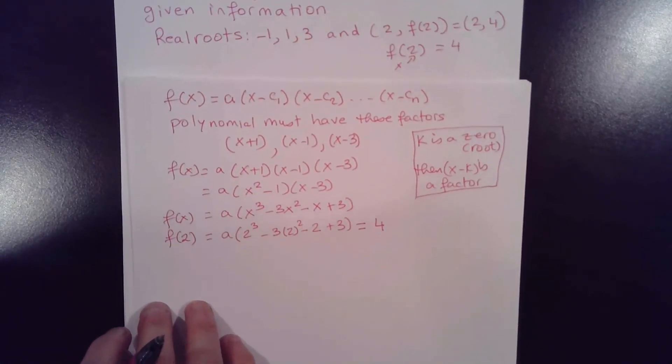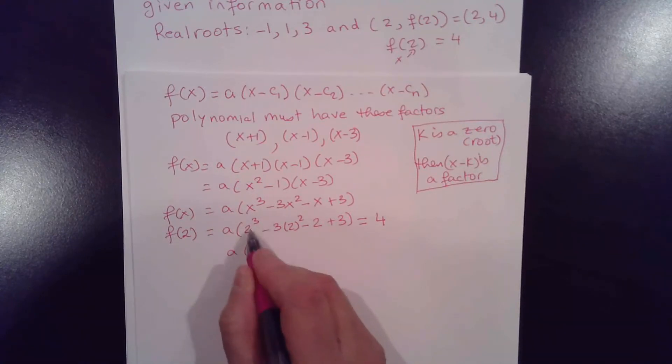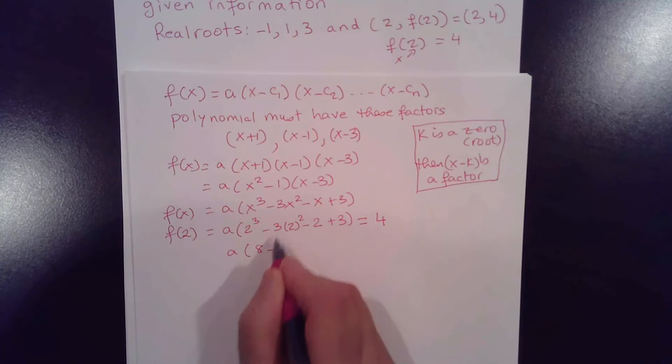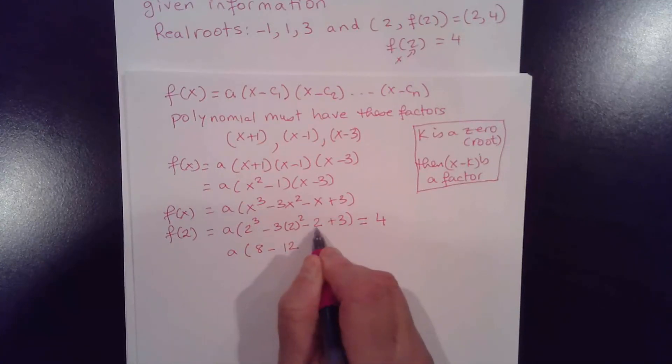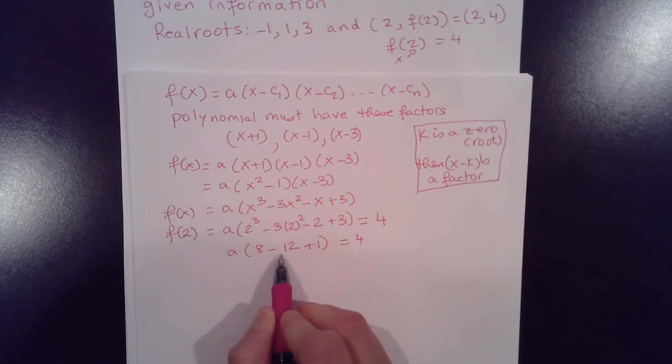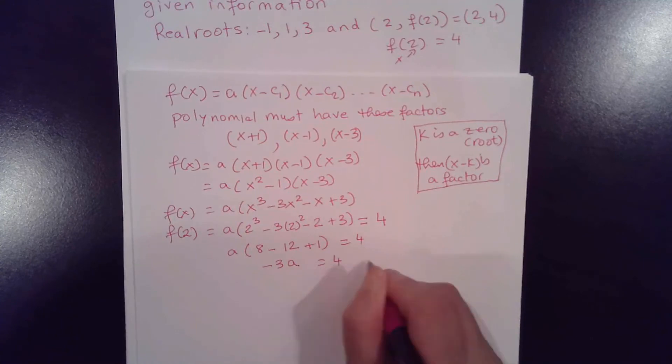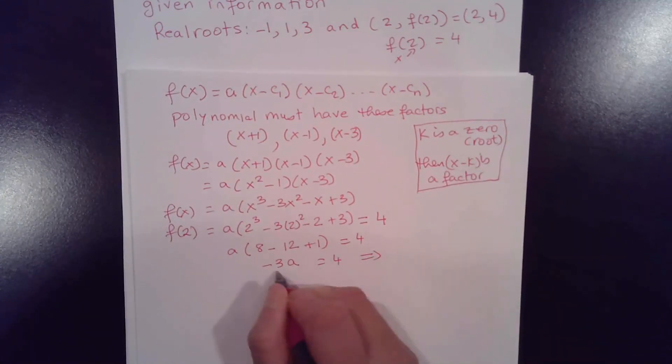Okay, so now simplifying this and solving for a, we get a times parenthesis 2 cubed is 8, minus 2 squared is 4, 4 times 3 is 12, negative 2 plus 3 is plus 1 equal to 4. Now, 8 minus 12 is negative 3, so negative 3a equals 4, and we just solve for a, divide both sides by negative 3, and a would be equal to negative 4 thirds.